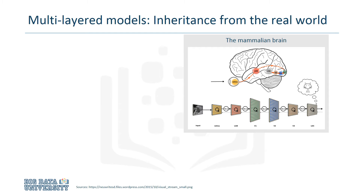But how does a mammalian brain accomplish this? It starts with the photoreceptors in the retina receiving information from the outside world. The primary part of the visual cortex, or V1, uses simple and complex cells to start processing the input. V4 identifies different textures, and the inferotemporal cortex puts everything together to recognize the object being observed. The main idea is that the process has multiple layers, different types of cells, and increasingly complex functionality.